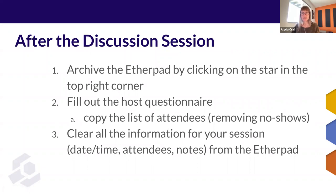Once you are done with the discussion, you will need to follow a few steps. First, archive the Etherpad by clicking the star in the top right corner — this will save all the notes from your call. Second, fill out the host questionnaire. There will be a link provided on the Etherpad for your community discussion. It will ask you to copy over the list of attendees, but be sure to remove no-shows when you do this. Once you have completed the questionnaire, you can clear all the information for your session from the Etherpad, including the date, time, list of attendees, and all the notes. Not to worry — you archived it in that first step.